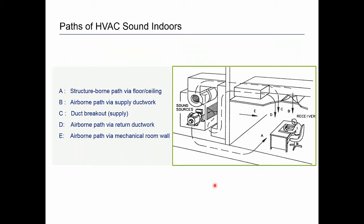Let's talk about some of these paths indoors. Imagine you have an HVAC system in a room indoors — it could be outside but separated by a wall, or on the roof separated by the roof-ceiling system. This is a very generic scenario: you basically have the unit on one side of a wall and a receiver on the other side. The vibration from the unit can go through all of the structures it has access to and then re-radiate into the room as structure-borne noise.